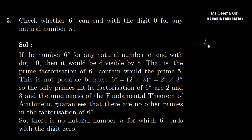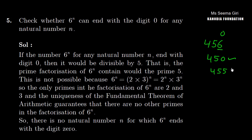For example, numbers like 4, 5, 6 — if a number ends in 0 or 5, then it would be divisible by 5. So, the prime factorization of 6 raised to the power n must contain the prime 5.